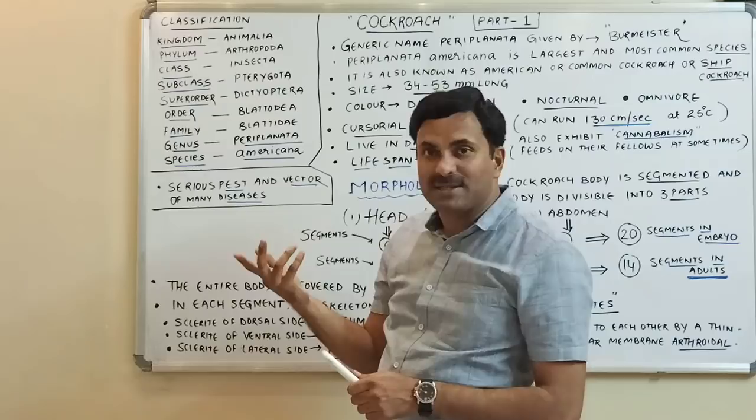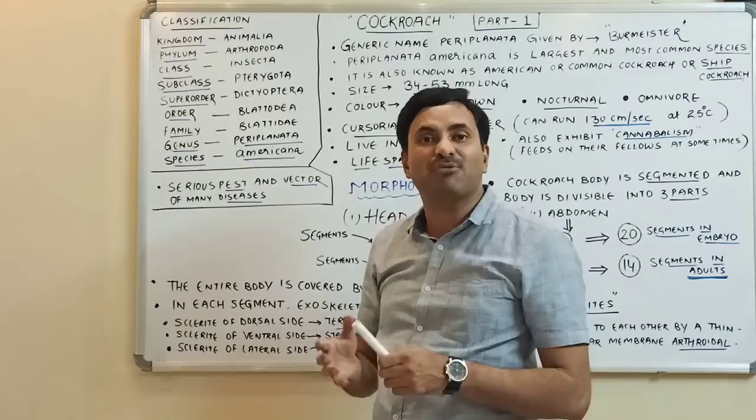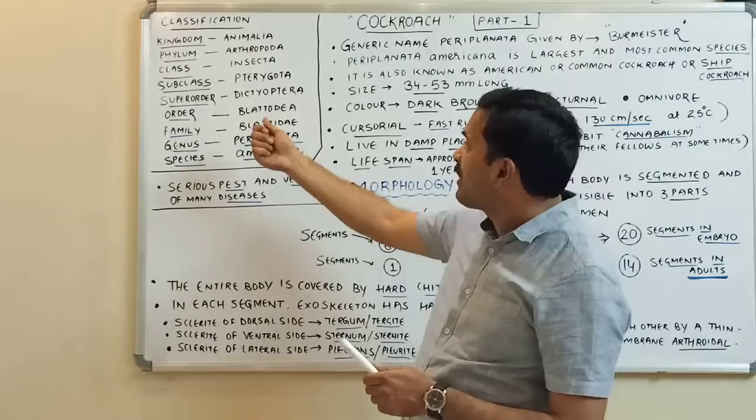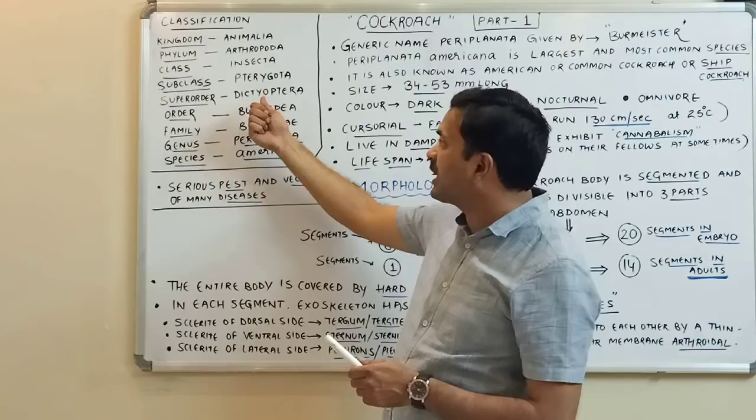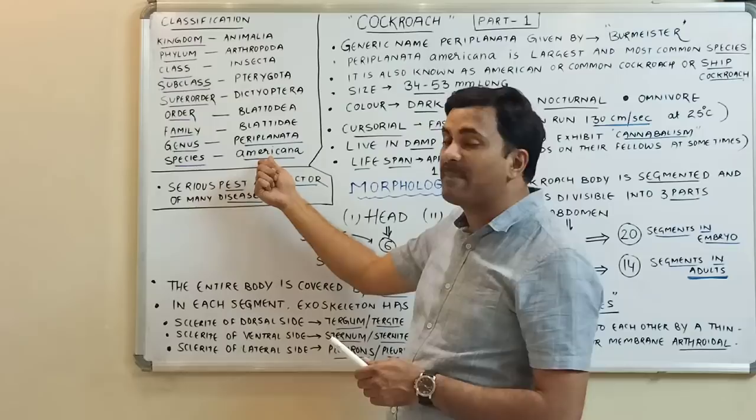It belongs to the class Insecta, which is the biggest class. This Insecta class is also called Hexapoda because it consists of three pairs of legs — six legs. The subclass is Pterygota, the super order is Dictyoptera, the order is Blattodea, and the family is Blattidae.